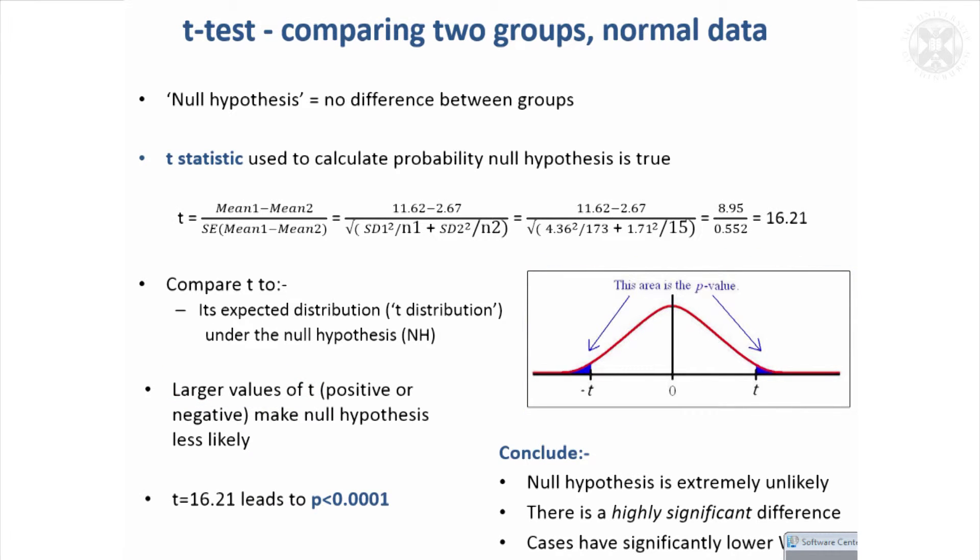And as we saw before, for this t-statistic of 16.21, which was way off the scale for the distribution, we got a highly significant p-value, a very small p-value, very small probability that the null hypothesis was true.